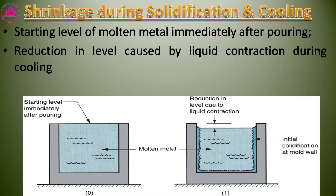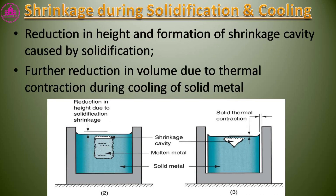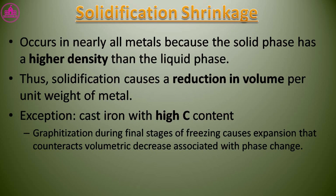Shrinkage during solidification and cooling involves several stages: the starting level of molten metal immediately after pouring; reduction in level caused by liquid contraction during cooling; reduction in height and formation of a shrinkage cavity caused by solidification; and further reduction in volume due to thermal contraction during cooling of solid metal.